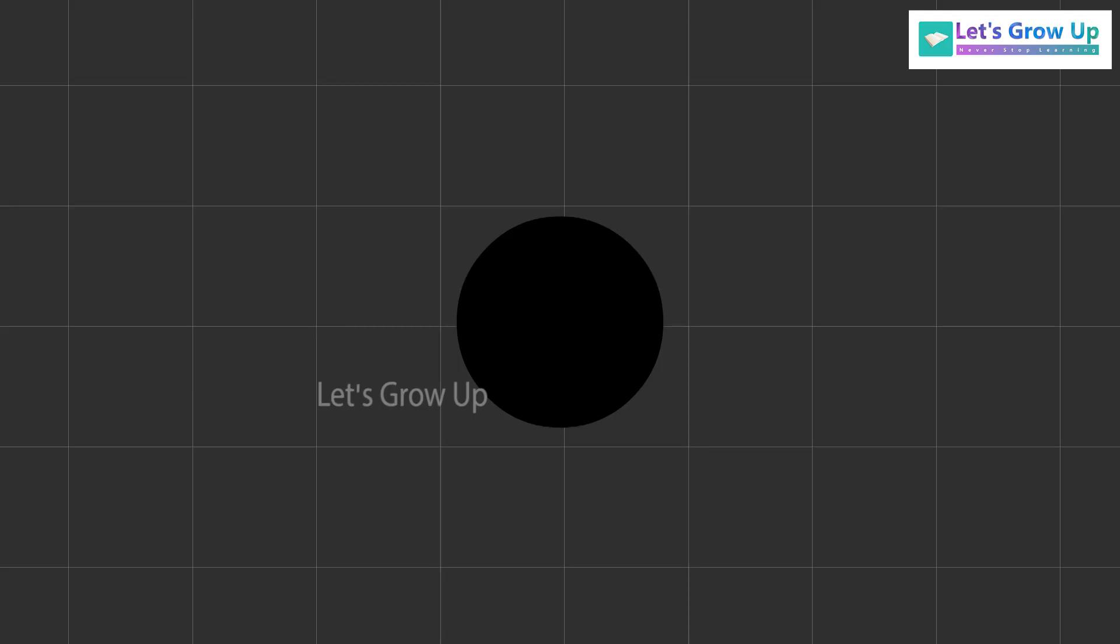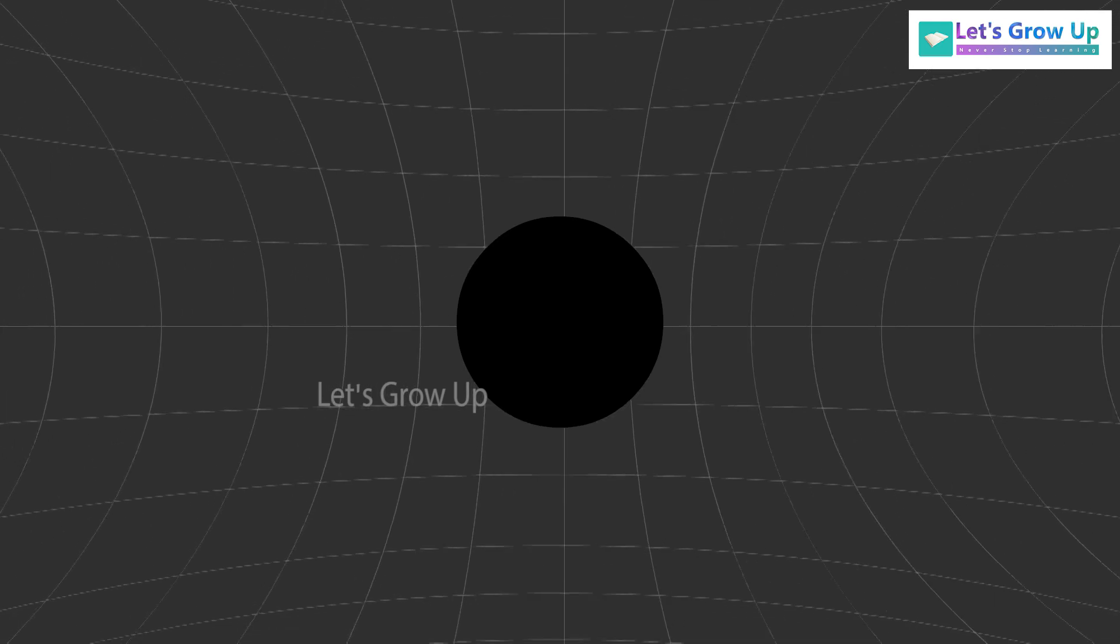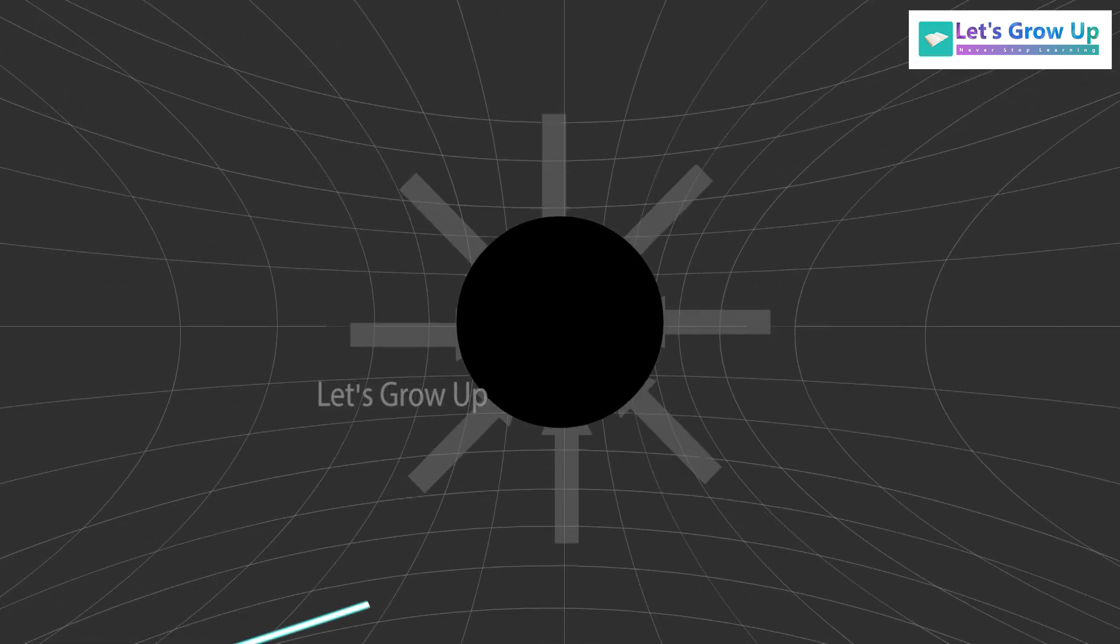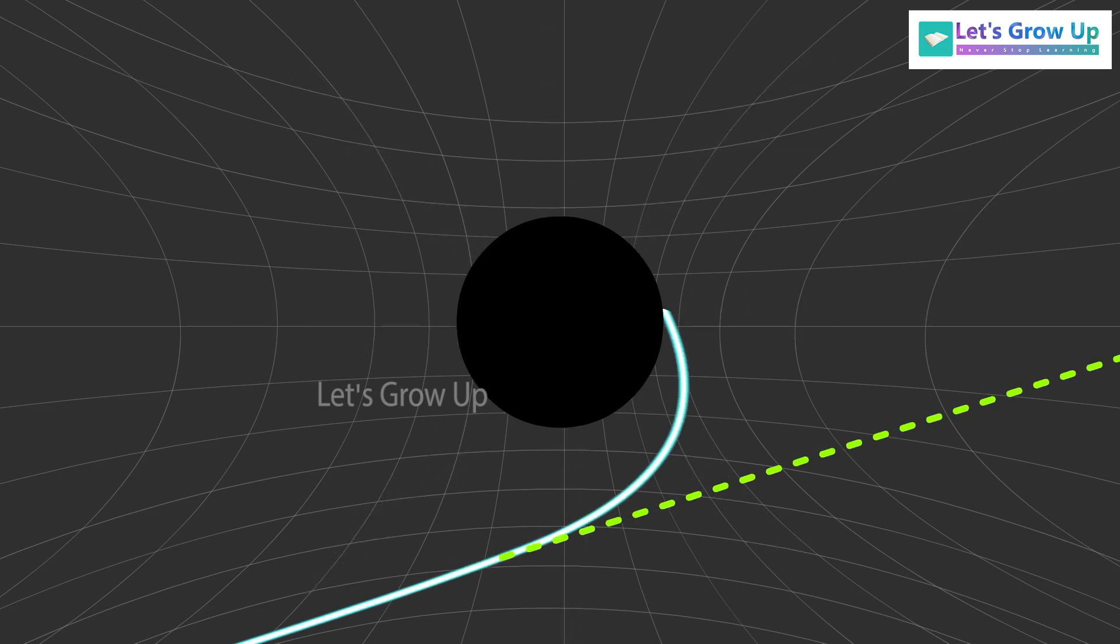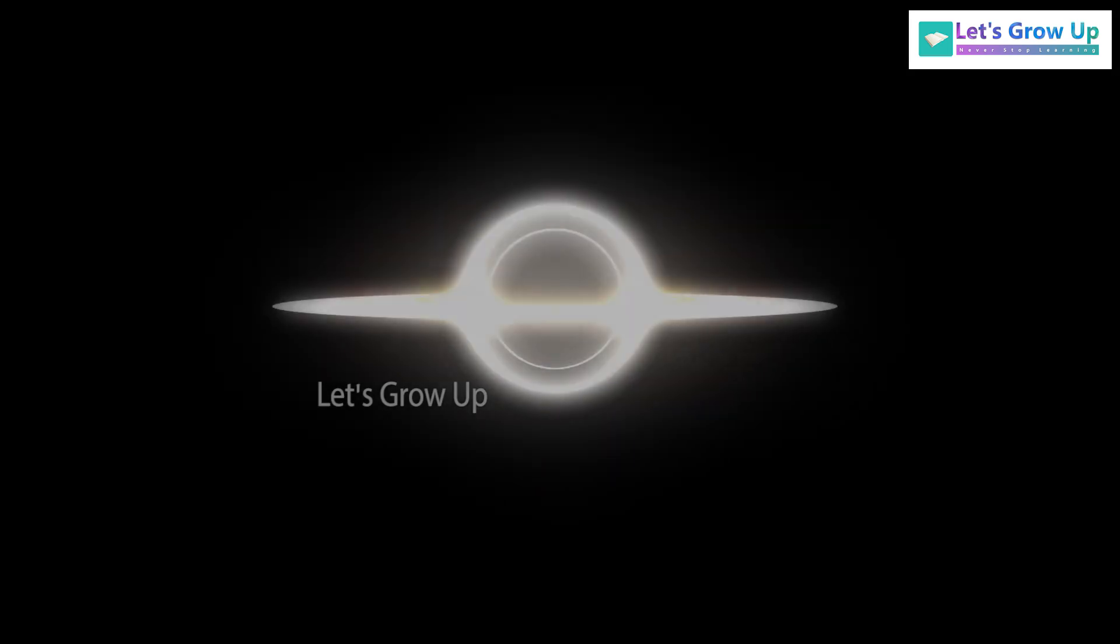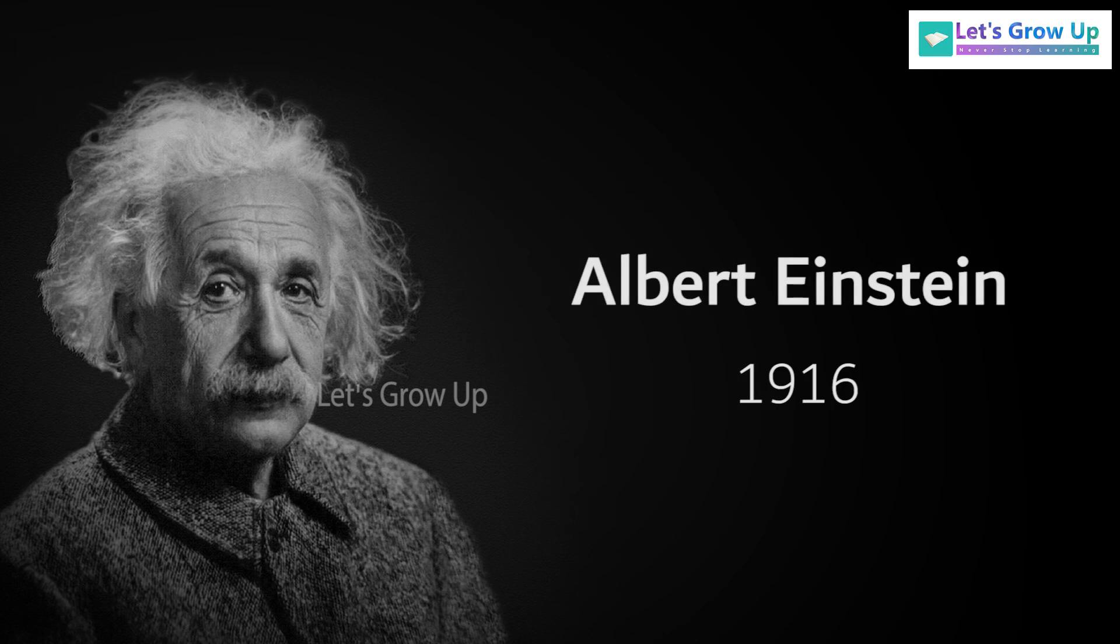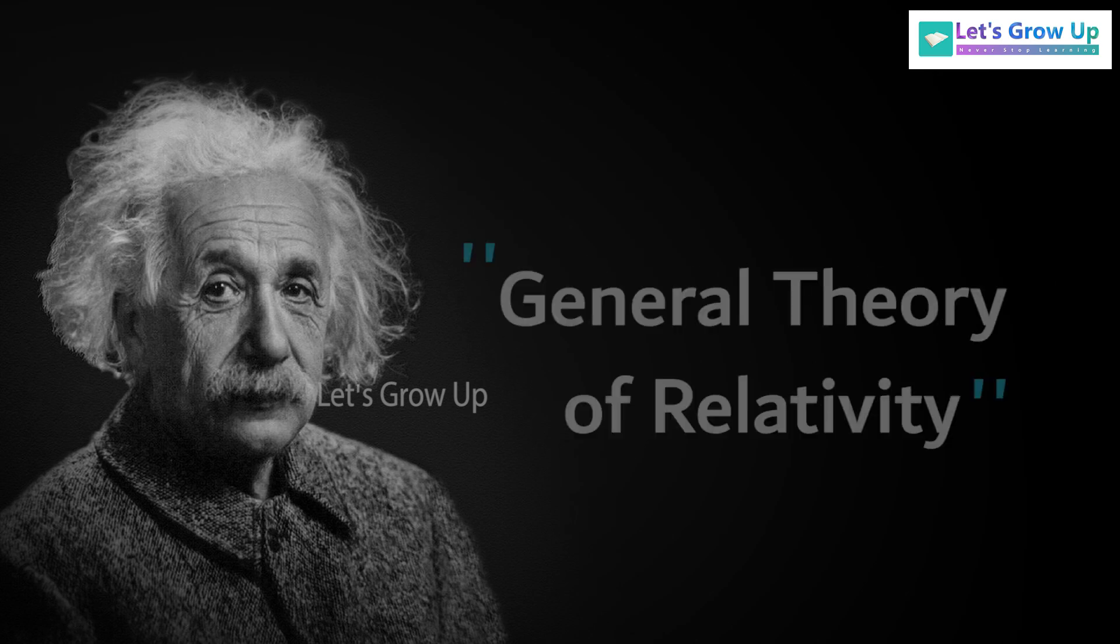Scientists say that black holes are volumes of space where the gravity is extreme. Not even light or the fastest moving particles can escape from it. The existence of black holes was first predicted by Albert Einstein in 1916 with his general theory of relativity.